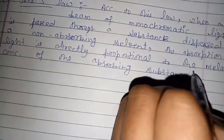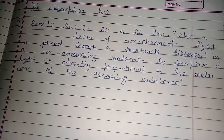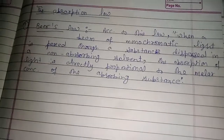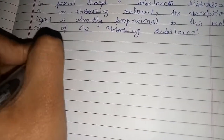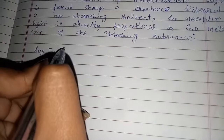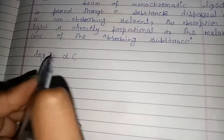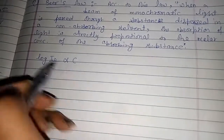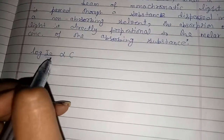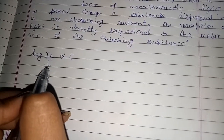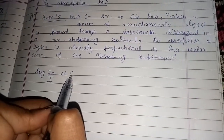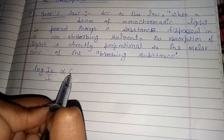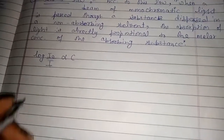This is the definition of Beer's Law. Mathematically, Beer's Law can be written as: log(I₀/I) is directly proportional to C. Here, I₀ is the intensity of incident light, I is the intensity of transmitted light, and C is the concentration of the absorbing substance in mole per liter.